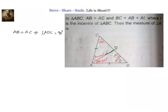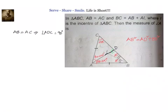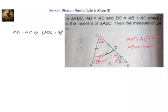Since angle D is 90 degrees, we can apply Pythagoras theorem: AB squared equals AD squared plus BD squared. That's our first condition. The given condition BC equals AB plus AI, and since D is the midpoint, BC equals 2 times BD. So we can write 2BD equals AB plus AI. This is our second condition.